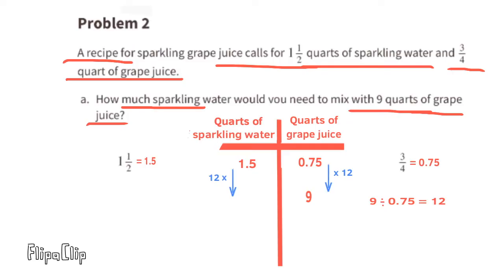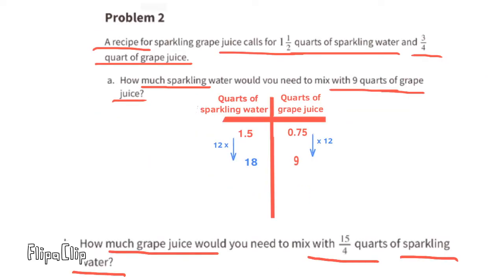1.5 times 12 equals 18. To keep this same ratio, you need to mix 18 quarts of sparkling water with nine quarts of grape juice. Part b: how much grape juice would you need to mix with 15 fourths quarts of sparkling water?